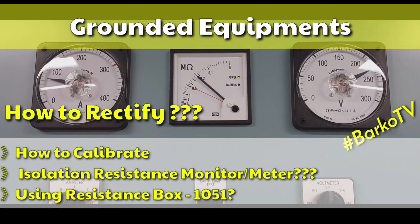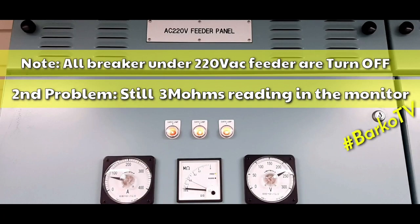Welcome back. Our topic for today is insulation monitor. Right now we have a reading of about 0.2 MΩ, which means we have a low insulation resistance — or in layman's terms, a grounded unit at about 0.2 MΩ.